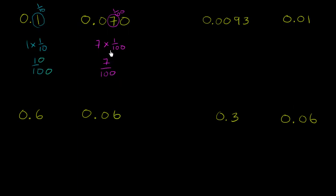Another way you could think about this: if you were to increment by hundredths, you would start at 7 hundredths, 8 hundredths, 9 hundredths, and then you'd get to 10 hundredths — and that's that number. So multiple ways you could think about it, 0.1 is definitely larger. Greater than. This is greater than that. The greater than symbol opens to the larger value.